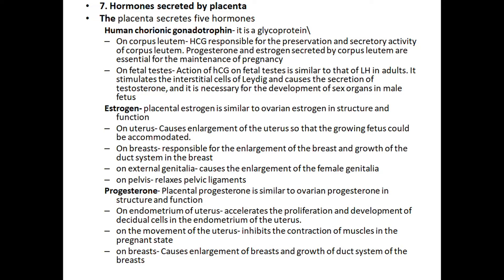Placental estrogen is similar to ovarian estrogen in structure and function. On the uterus, it causes enlargement to accommodate the fetus. On the breast, it is responsible for enlargement and growth of the duct system. On external genitalia, it causes enlargement of the female genitalia. On the pelvis, it relaxes the pelvic ligaments. Progesterone: placental progesterone is similar to ovarian progesterone in structure and function. On the endometrium, it accelerates proliferation and development of decidual cells.